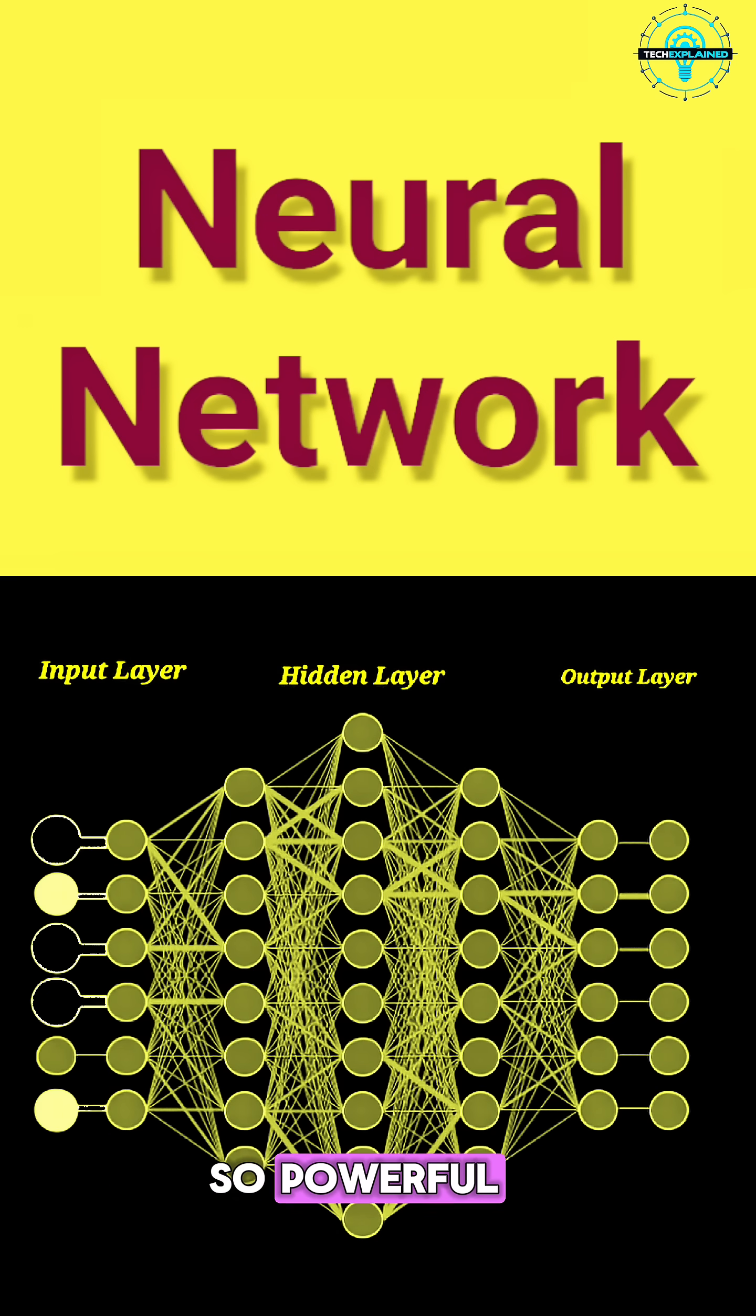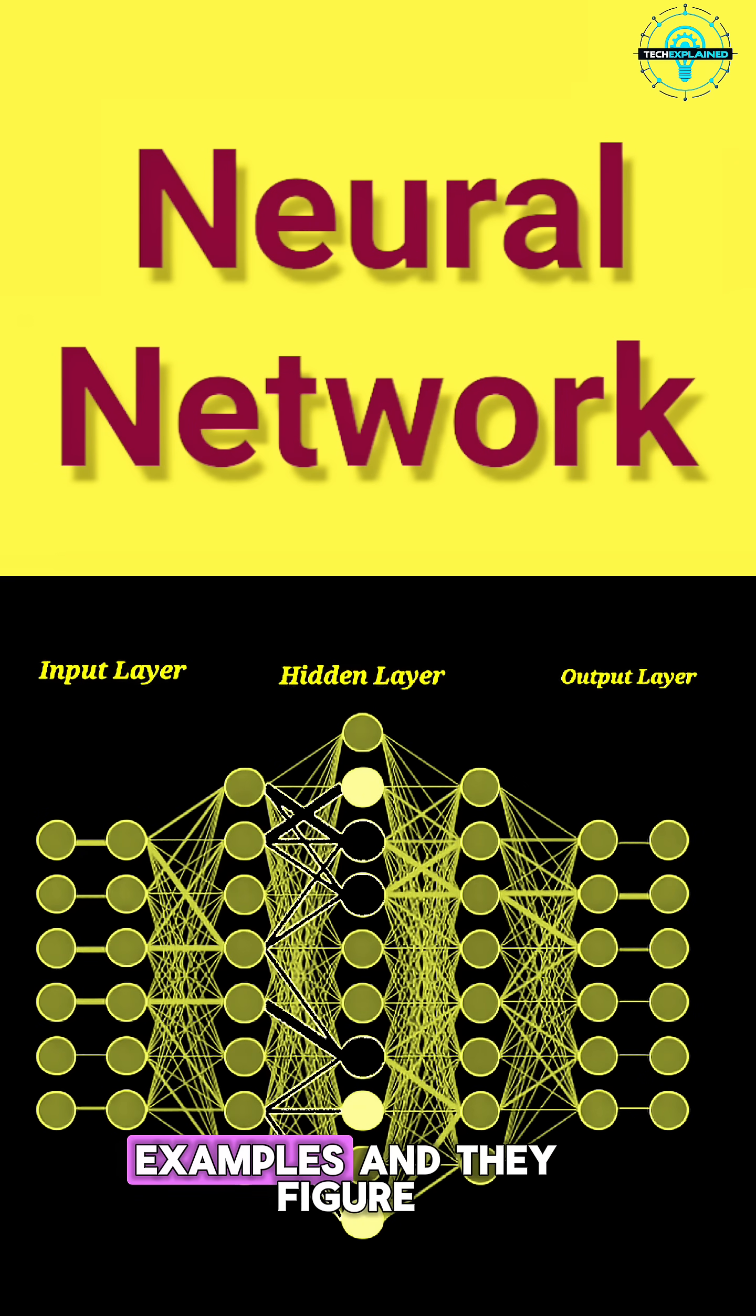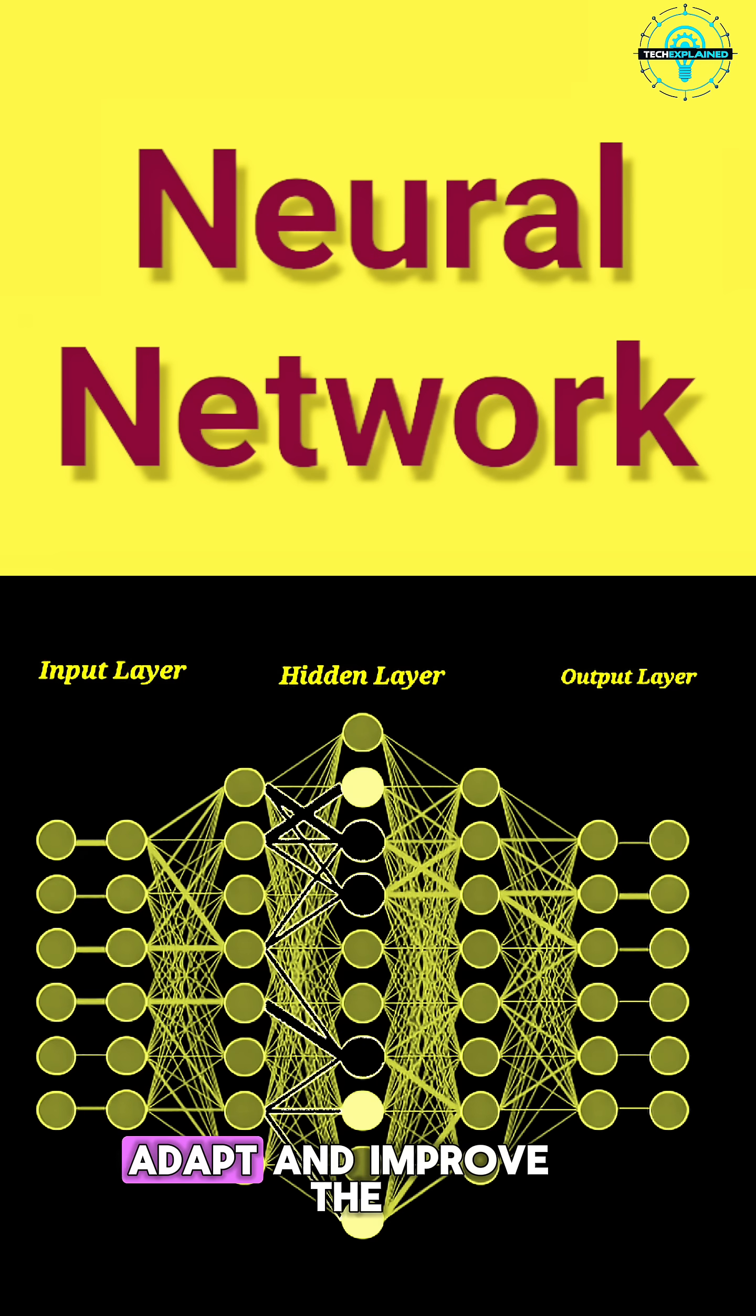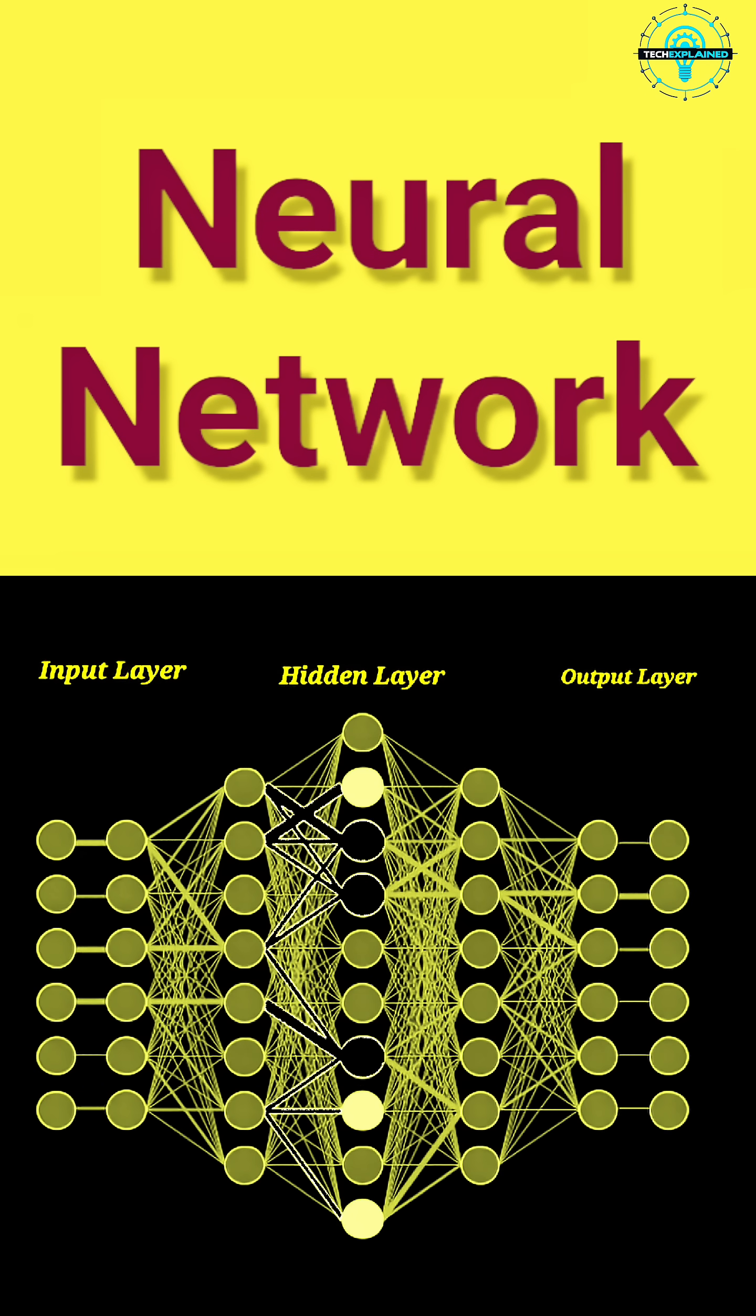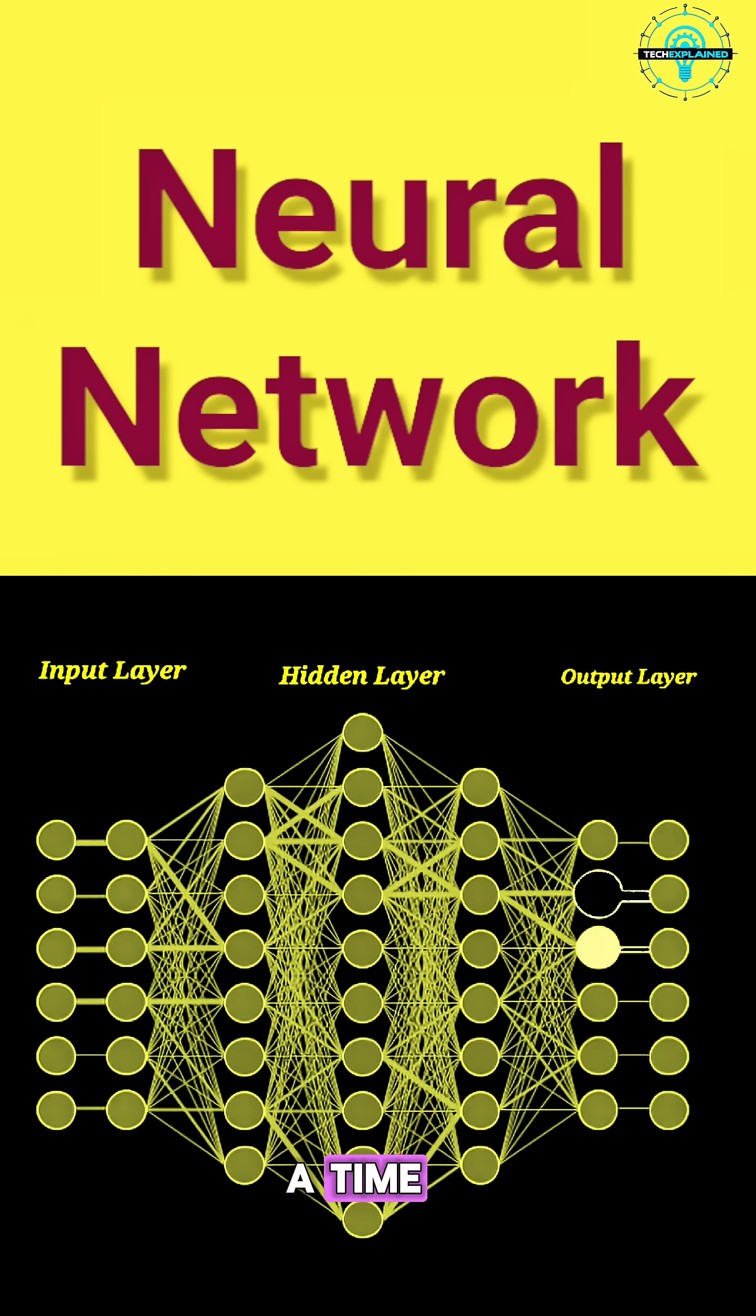What makes neural networks so powerful is that you don't have to teach them step-by-step rules. You give them enough examples, and they figure it out on their own. That's the beauty of it. They learn, adapt, and improve the more they see. So, in a world that's getting smarter by the second, neural networks are the quiet geniuses helping power it all. One prediction, one recommendation, and one pattern at a time.